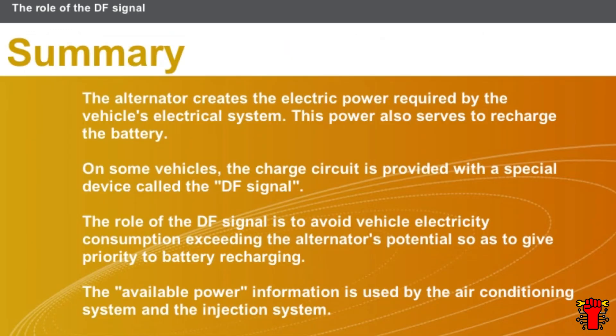In this chapter, we covered the following points. The alternator creates the electrical power required by the vehicle's electrical system, and this power also serves to recharge the battery. On some vehicles, the charge circuit is provided with a special device called the DF signal. The role of the DF signal is to avoid vehicle electricity consumption exceeding the alternator's potential, so as to give priority to battery recharging. The available power information is used by the air conditioning system and the injection system.